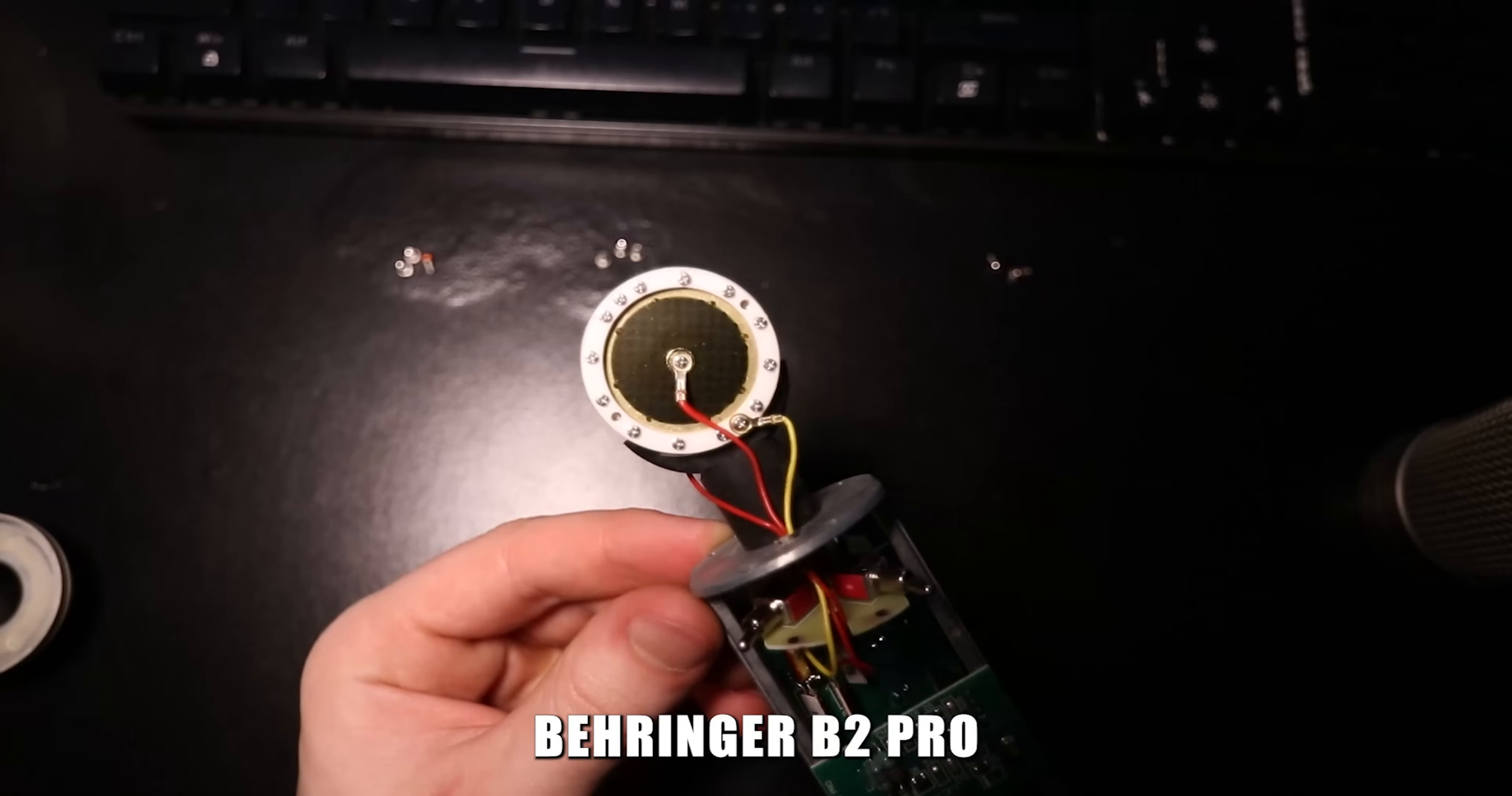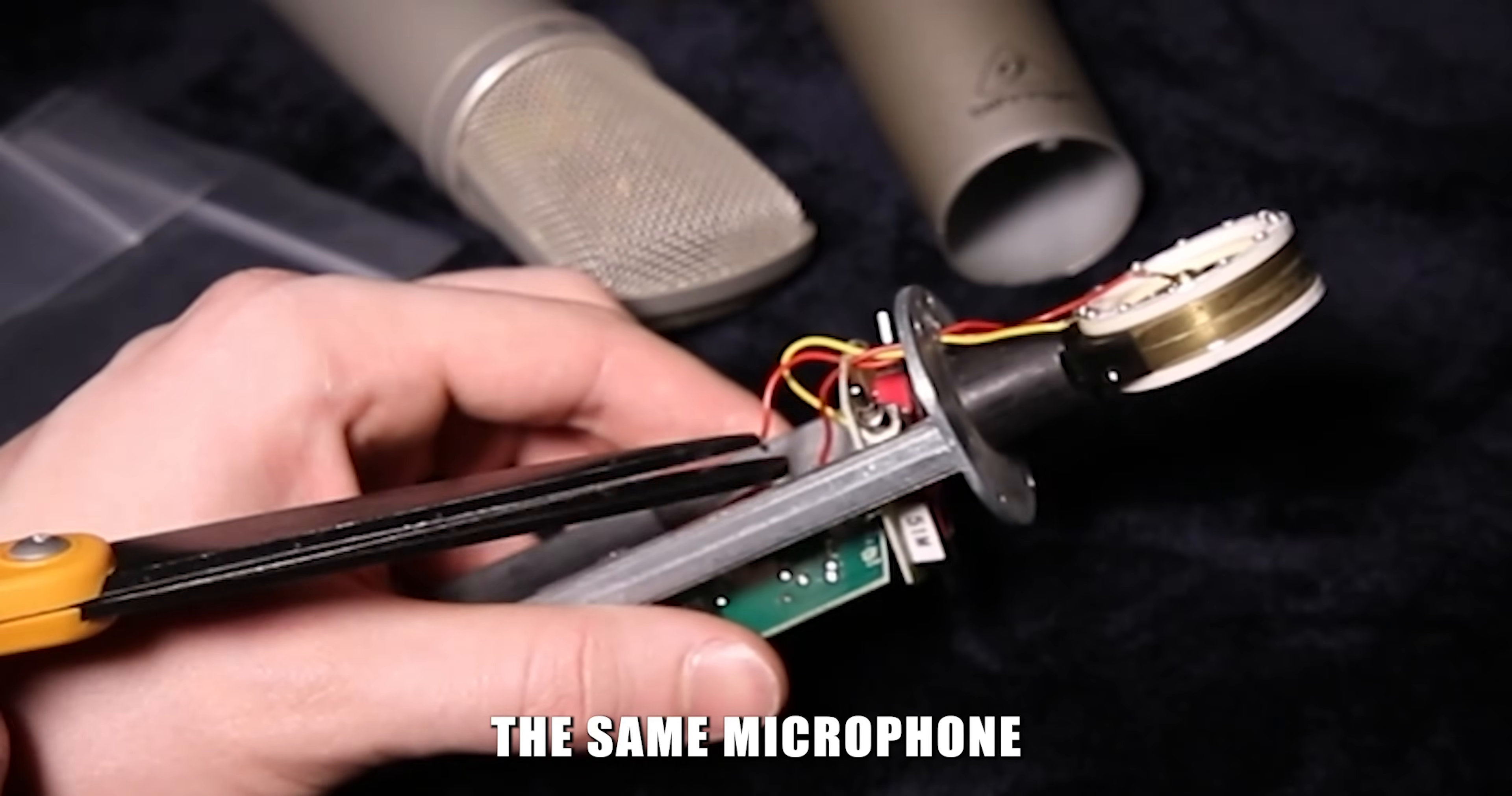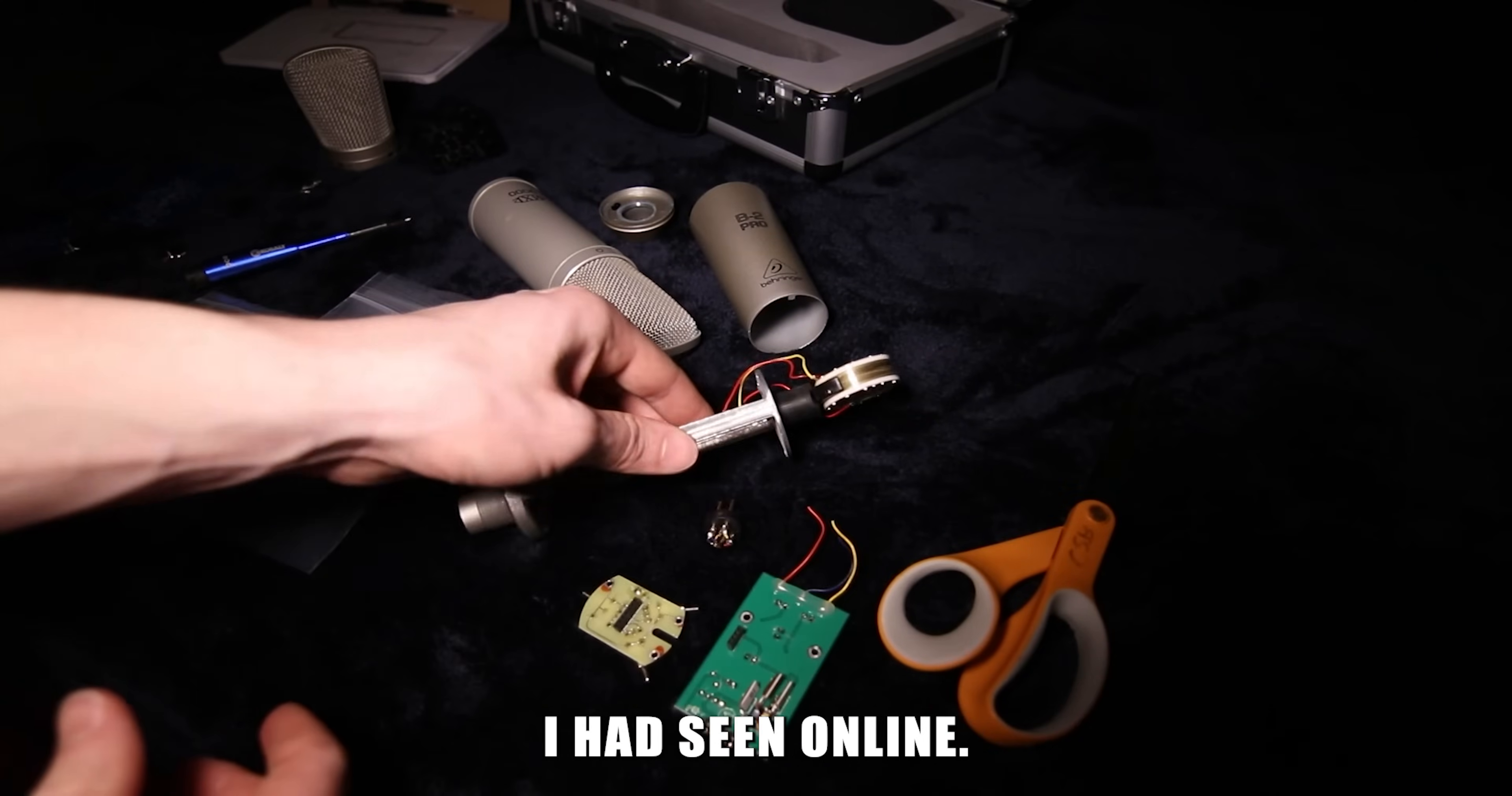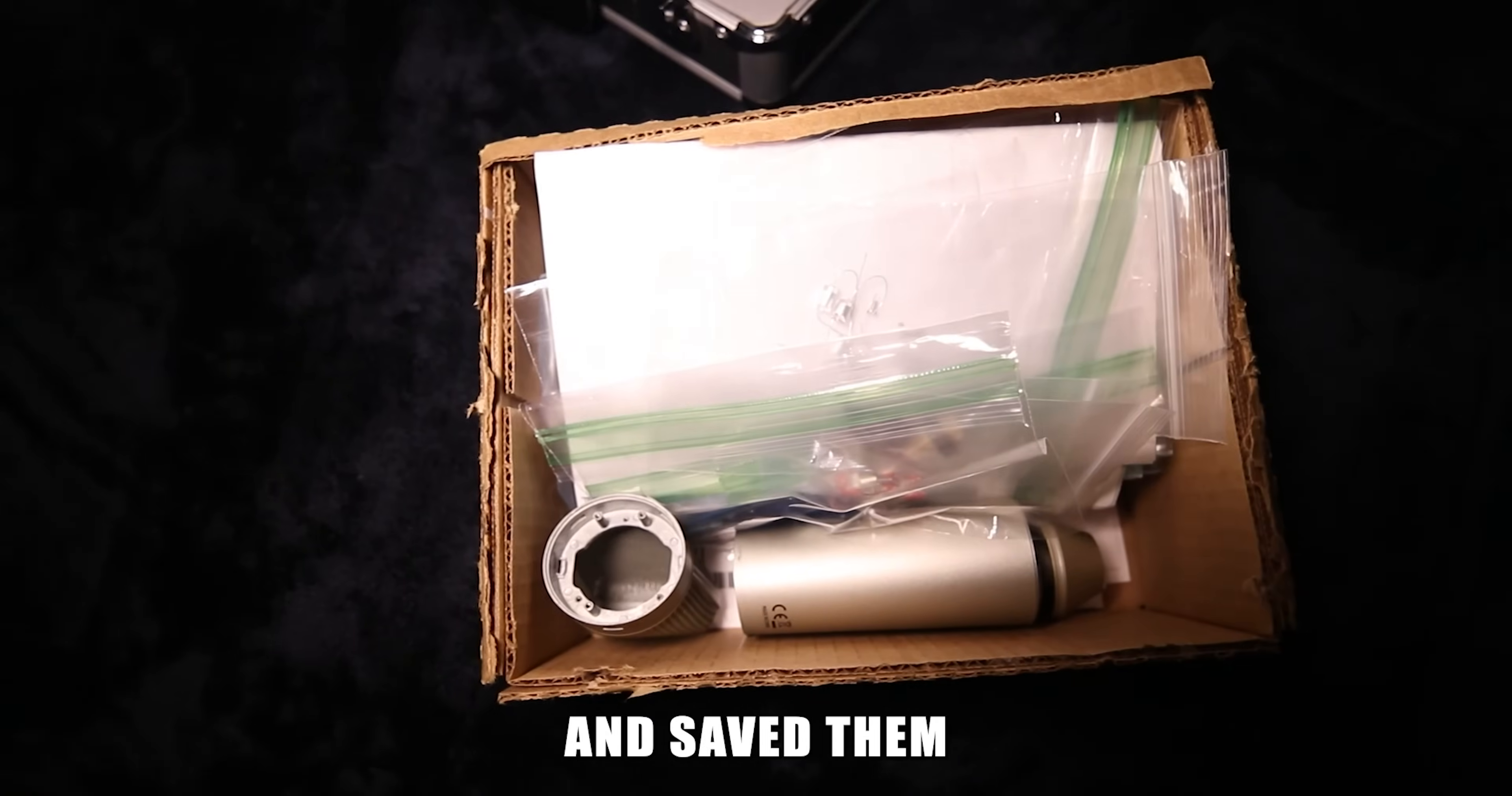I read online that the Behringer B2 Pro was a good body to start with for a build. It turns out the B2 Pro is not the same microphone everywhere you get it. There's actually two versions and the version I got was not designed as well as the one I had seen online. I had to modify it a lot to fit the parts I ordered. I disassembled its components and saved them for later.